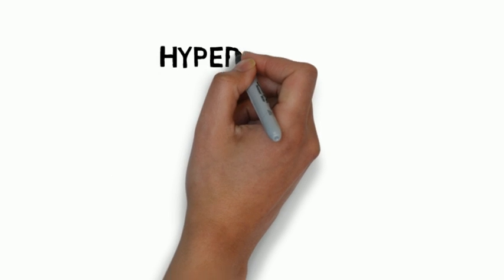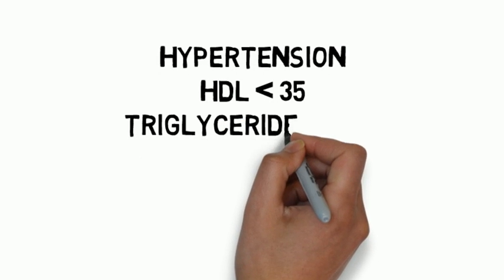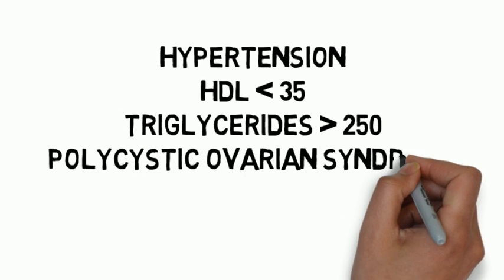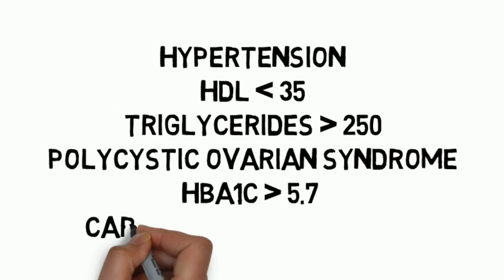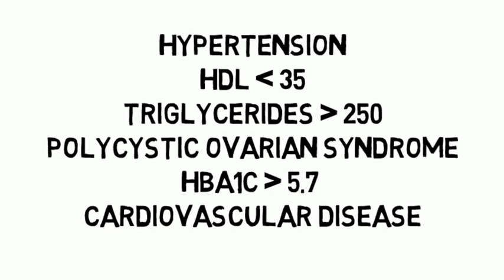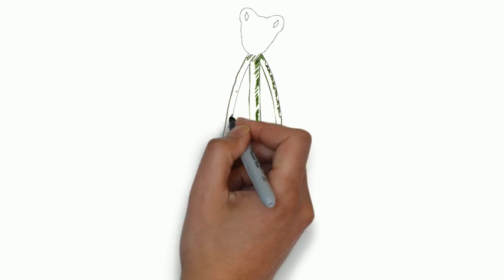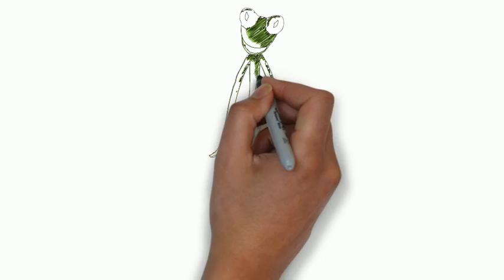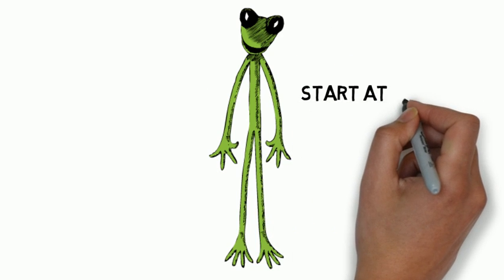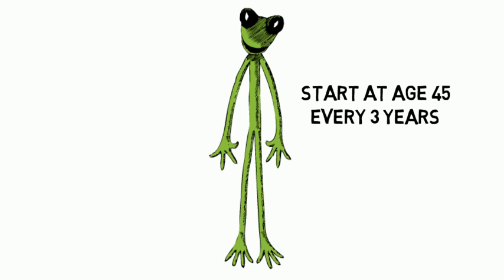Additional risk factors include: women who delivered a baby weighing greater than 9 pounds or had previous gestational diabetes, hypertension, HDL cholesterol less than 35, triglycerides greater than 250, women with polycystic ovarian syndrome, hemoglobin A1c greater than 5.7 on previous testing, or history of cardiovascular disease. If someone doesn't have any of these risk factors or is not overweight, testing should begin at age 45.